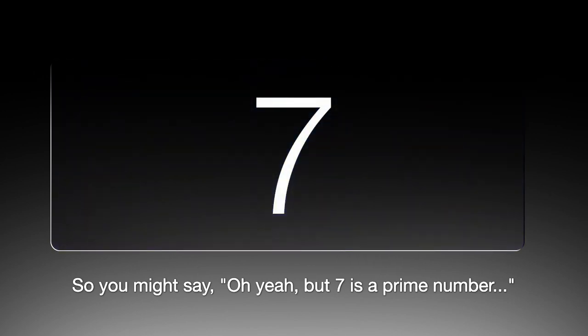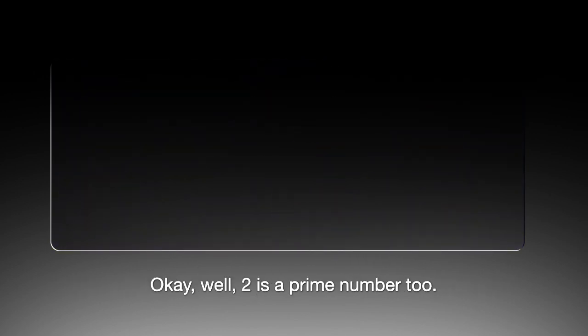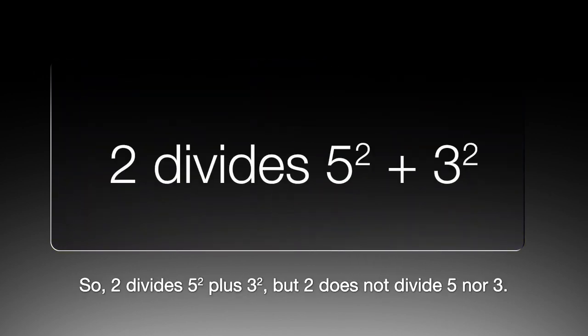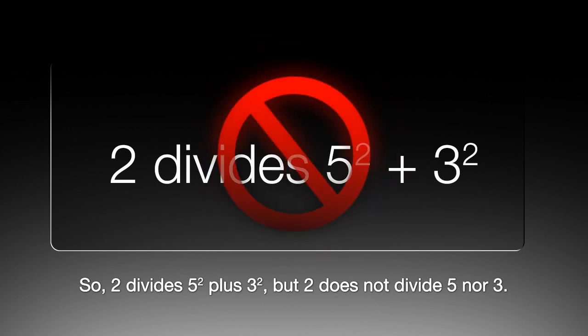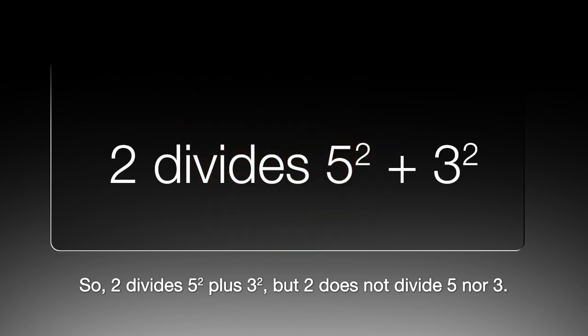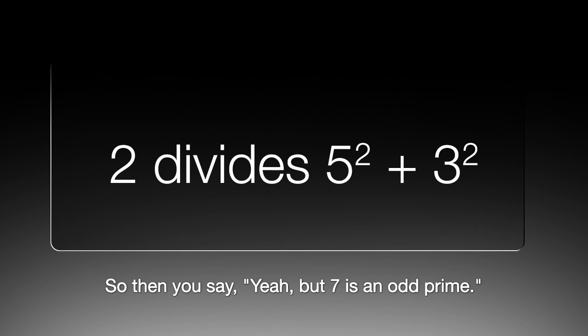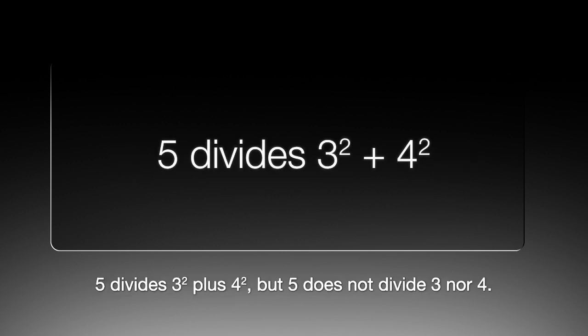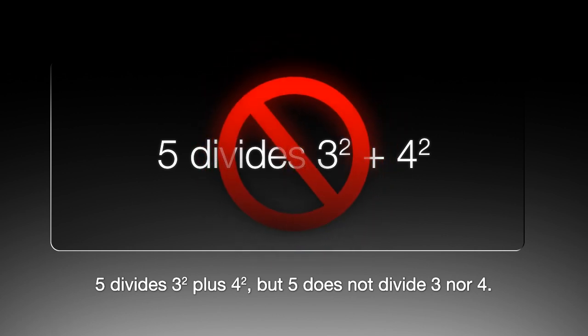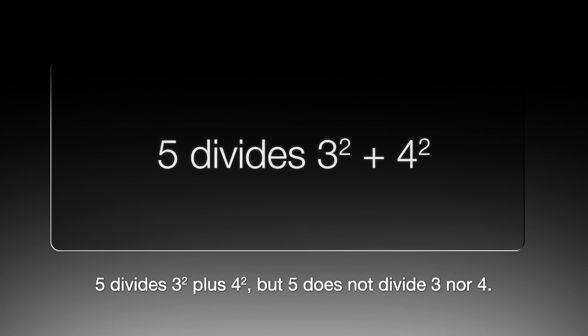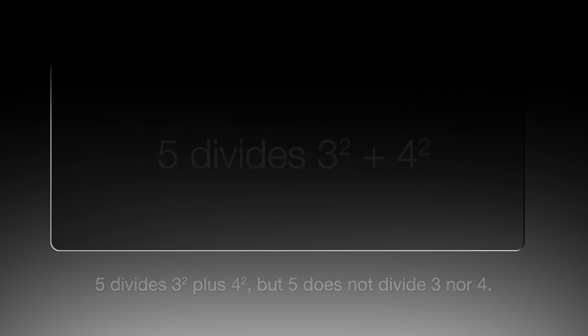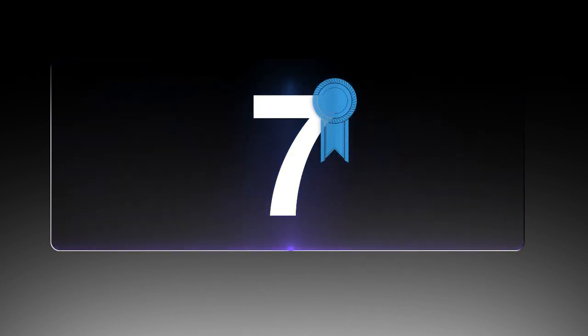So you might say oh yeah but 7's a prime number. Okay well 2's a prime number too, so 2 divides 5 squared plus 3 squared but 2 does not divide 5 nor 3. So then you say oh yeah but 7's an odd prime. Okay, 5 divides 3 squared plus 4 squared but 5 does not divide 3 nor 4. So 7 seems to be a little bit special.